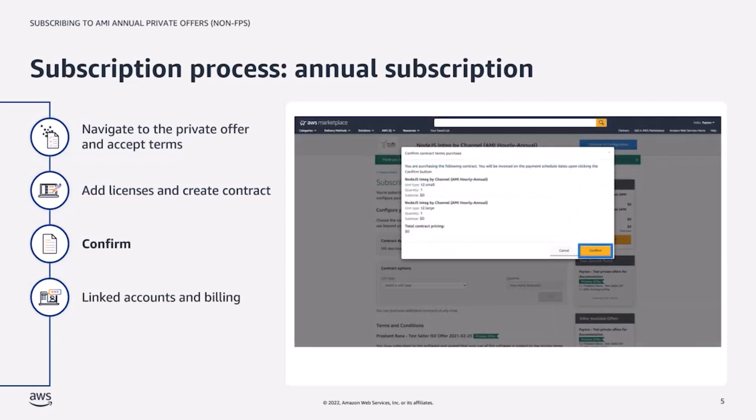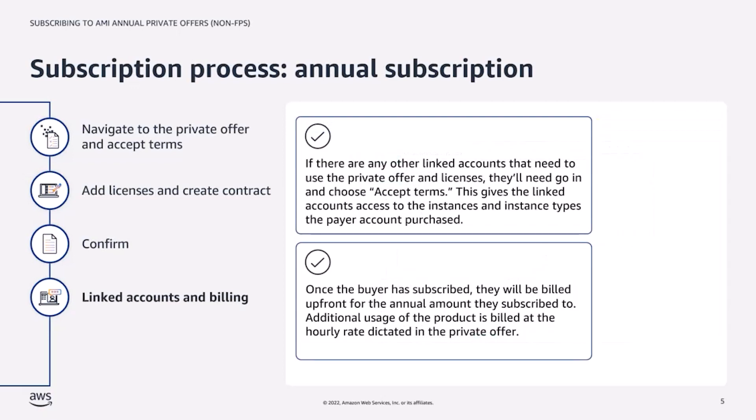And finally, choose Confirm. It is important to note that the payer account will go through the process just described. If there are any other linked accounts that need to use the private offer and licenses, then the linked accounts go in and choose Accept Terms. This gives the linked accounts access to the instances and instance types the payer account purchased.